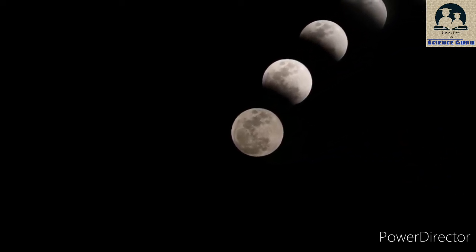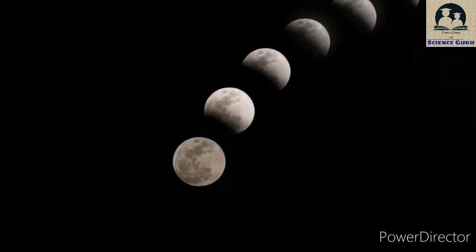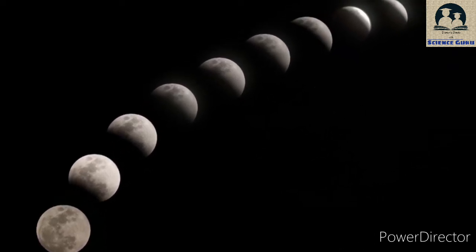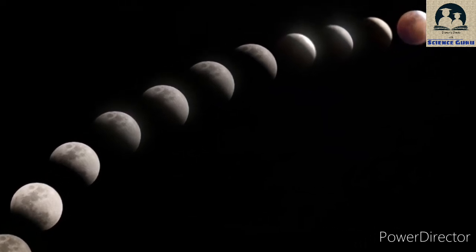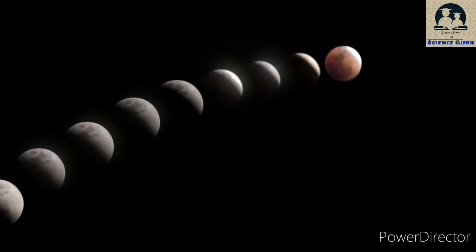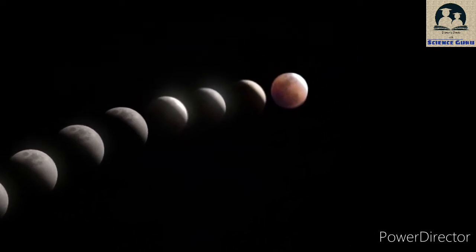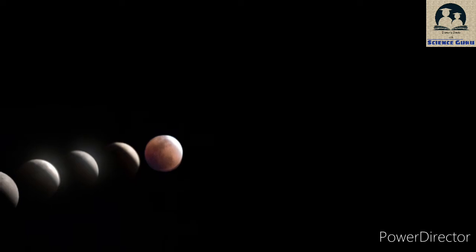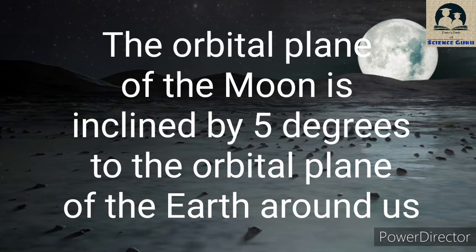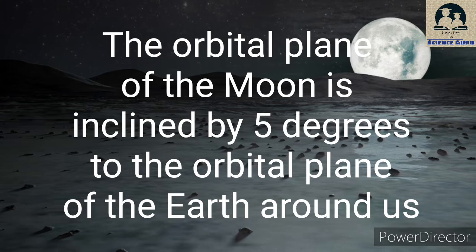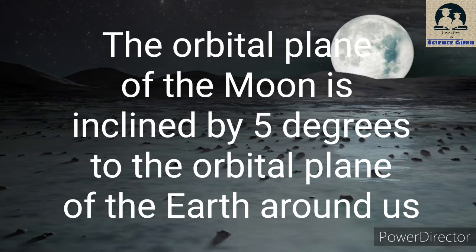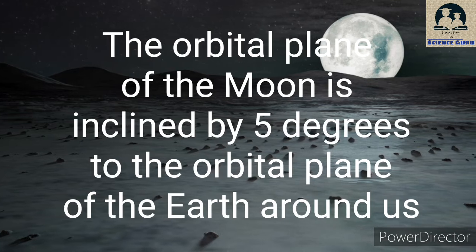A solar eclipse occurs when the moon comes in between the sun and the earth in a straight line and in the same orbital plane. The places on the earth's surface where the shadow of the moon falls, one can see the solar eclipse. It's a fact that on every new moon, the moon comes in between the sun and the earth but still no solar eclipse. Why? It's simple geometry. The orbital plane of the moon is inclined by 5 degrees to the orbital plane of the earth around the sun. Due to this reason, the shadow of the moon mostly passes above or below the earth.